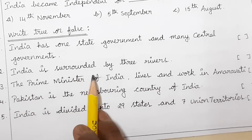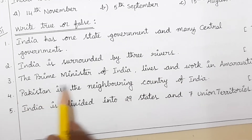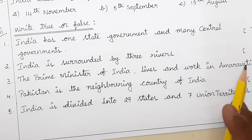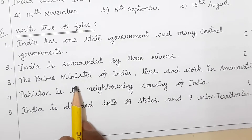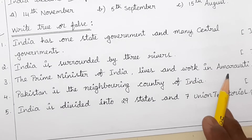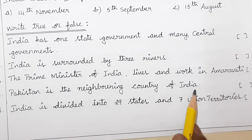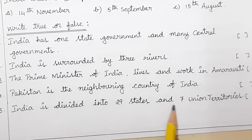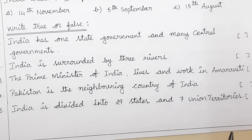True or false items: 'India is surrounded by three rivers.' Next: 'The Prime Minister of India lives and works in Amaravati' — the Prime Minister lives in New Delhi, so check that. 'Pakistan is a neighboring country of India.' 'India is divided into 29 states and seven union territories' — check whether this is correct or wrong.